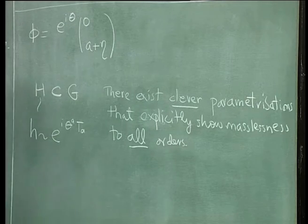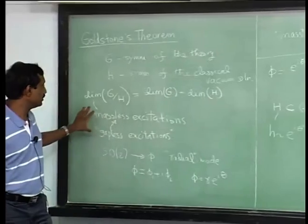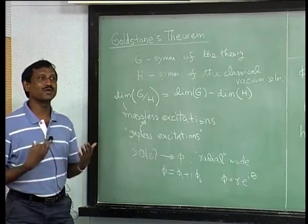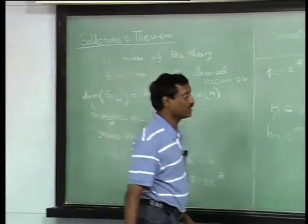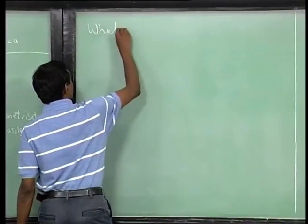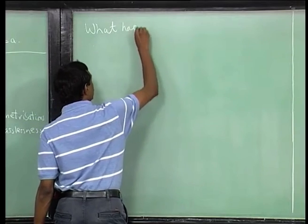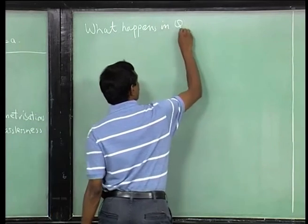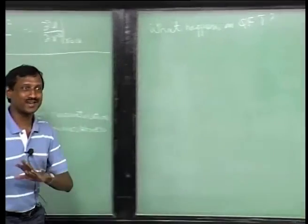There exist clever parameterizations that explicitly show masslessness to all orders. We have been discussing classical field theories, but we can ask what happens in quantum field theory — something important comes up, even though this is not a QFT course. The result is worth remembering.